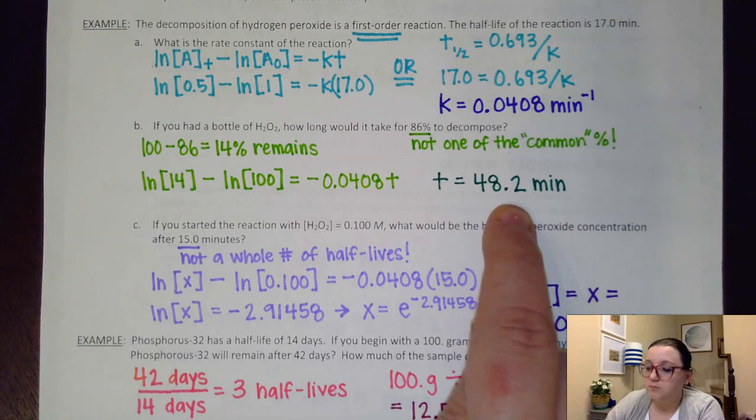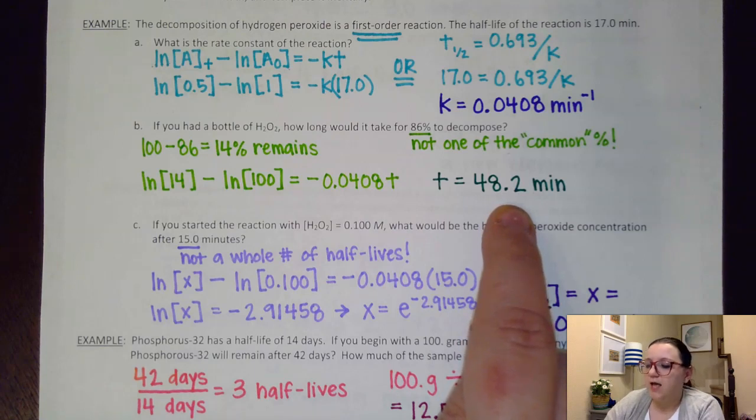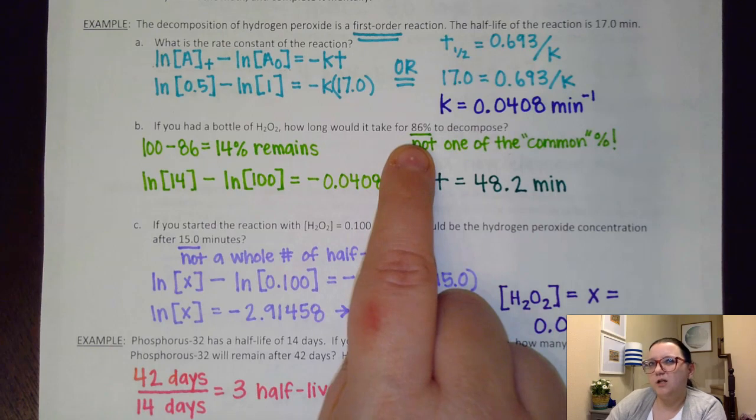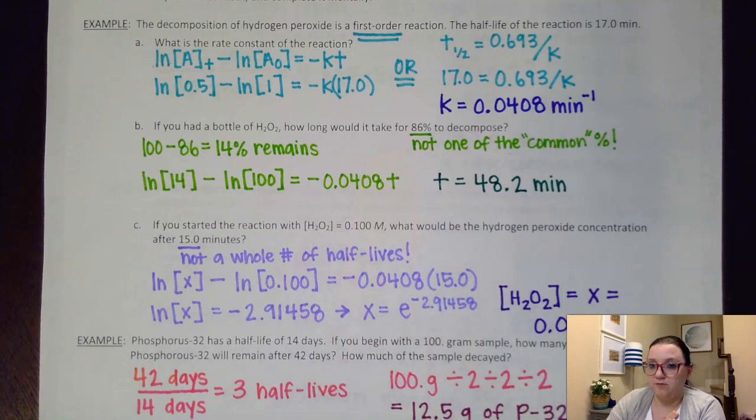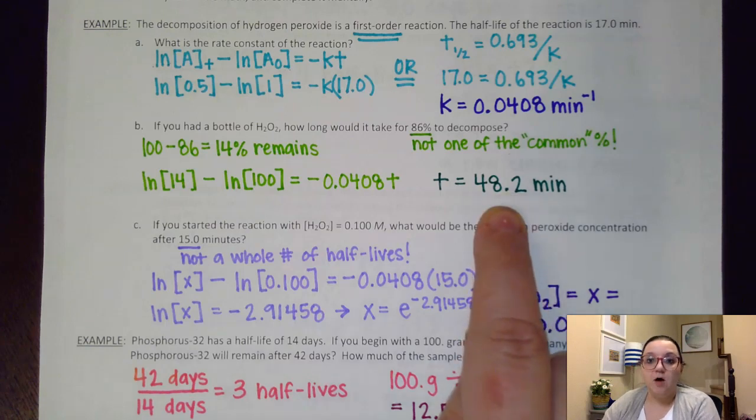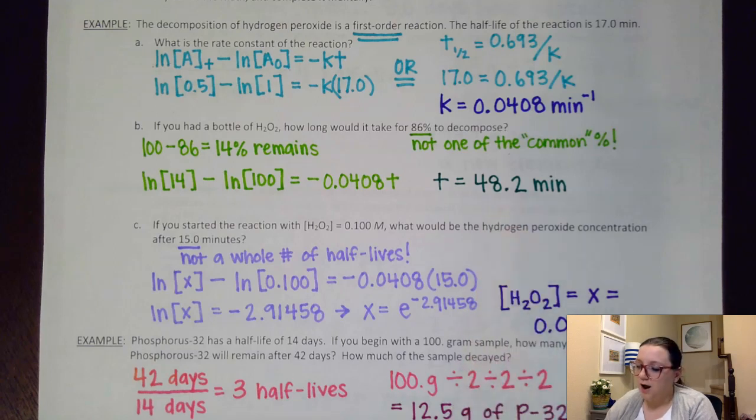So I'm trying to figure out the time, and I can plug in my K from part A. And when I do that, what I end up getting is T equaling 48.2 minutes. Now, I'm going to ask myself if that answer makes sense. We said just a moment ago that 86% is really close to that 87.5 mark. That would be three half-lives.